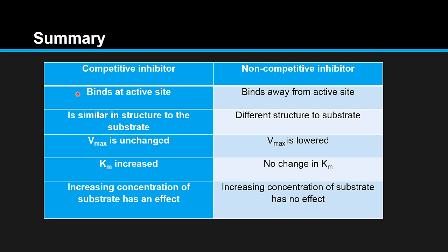In summary — competitive inhibitor versus non-competitive inhibitor: the competitive inhibitor binds at the active site whereas the non-competitive binds away from the active site. The competitive inhibitor is similar in structure to the substrate, while the non-competitive has a different structure. With the competitive inhibitor Vmax is unchanged, whereas Vmax is lowered for non-competitive.